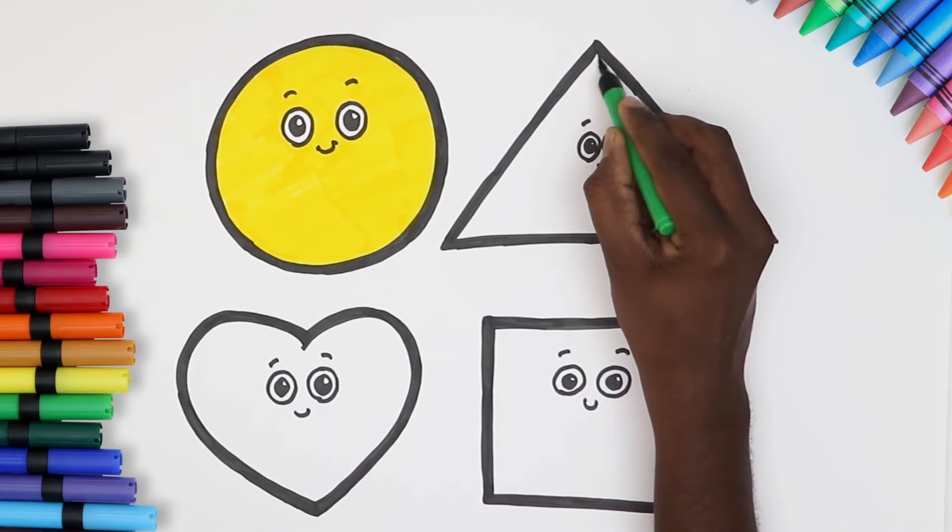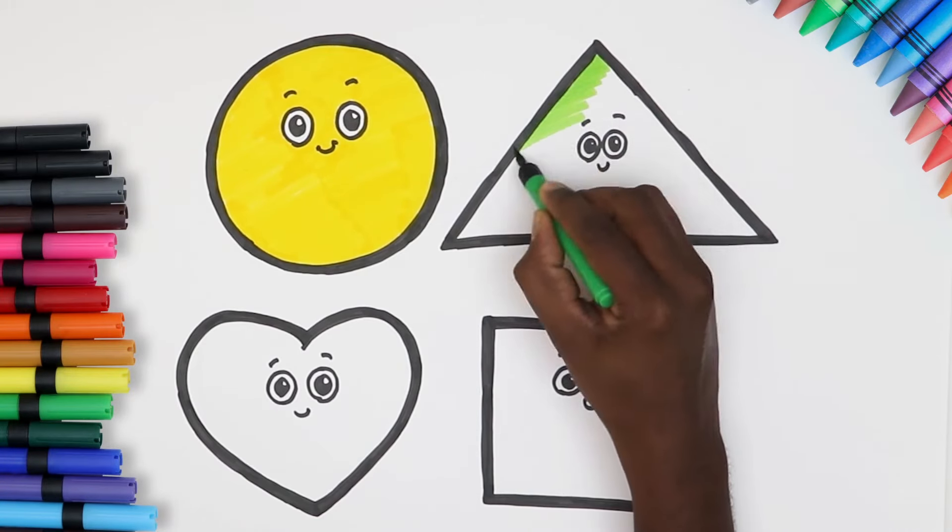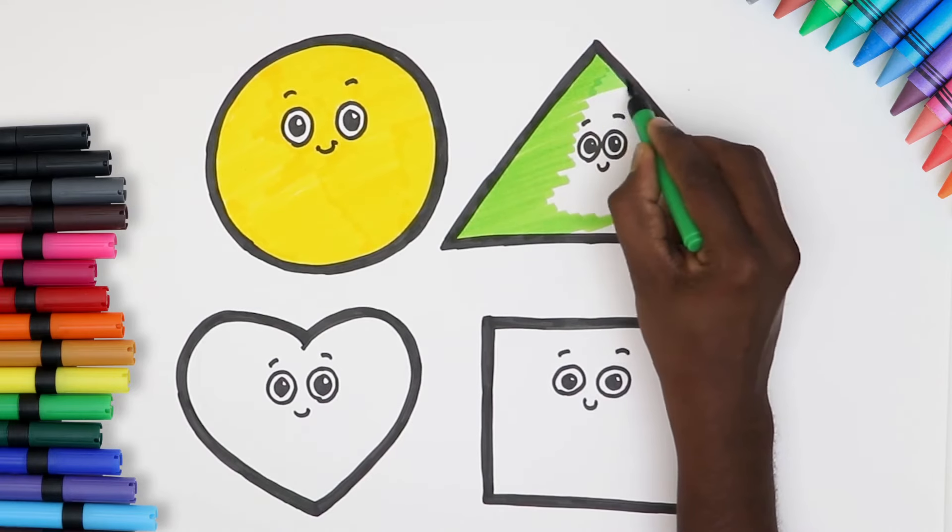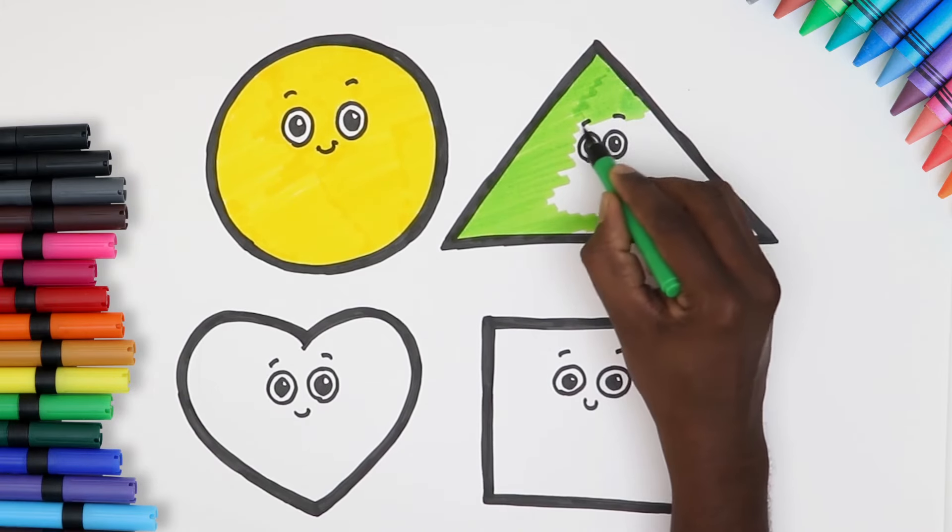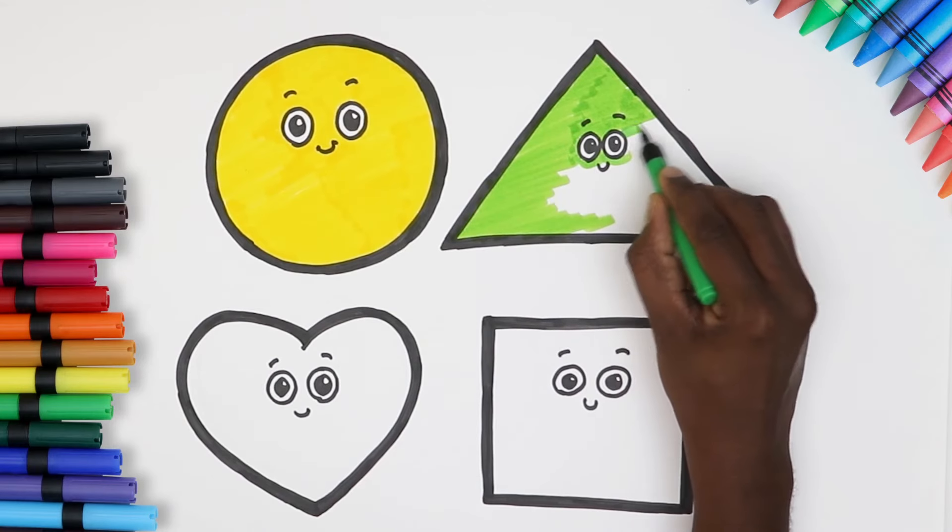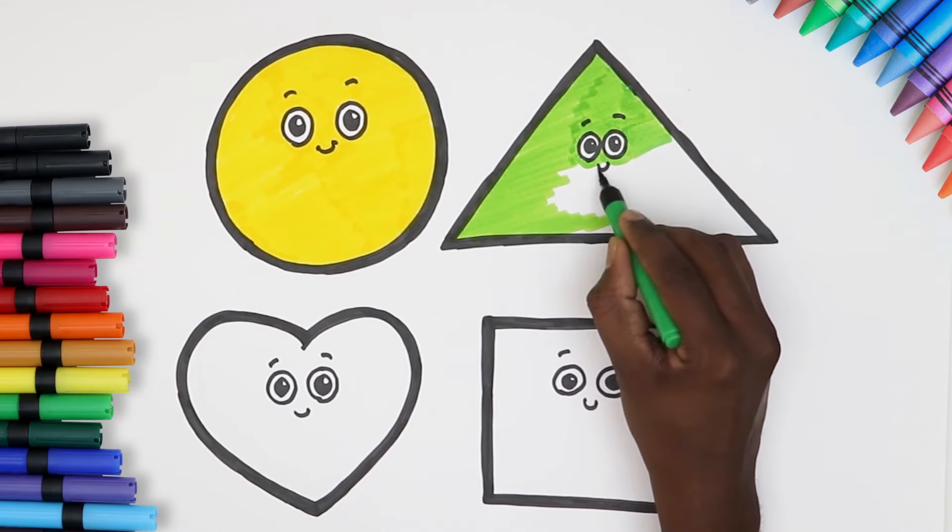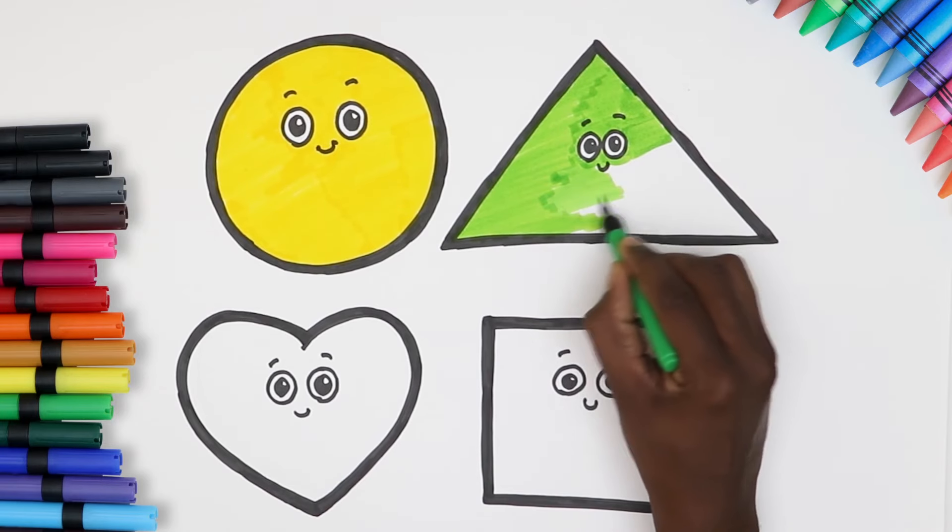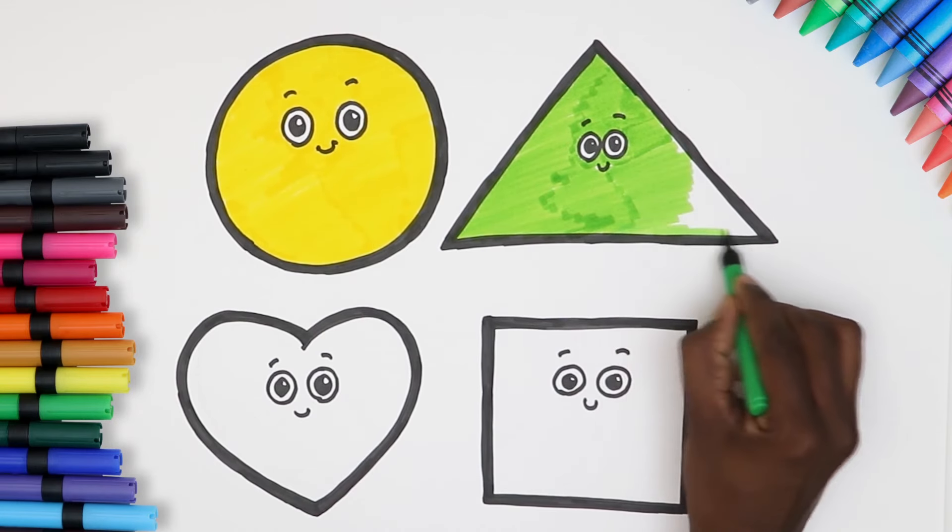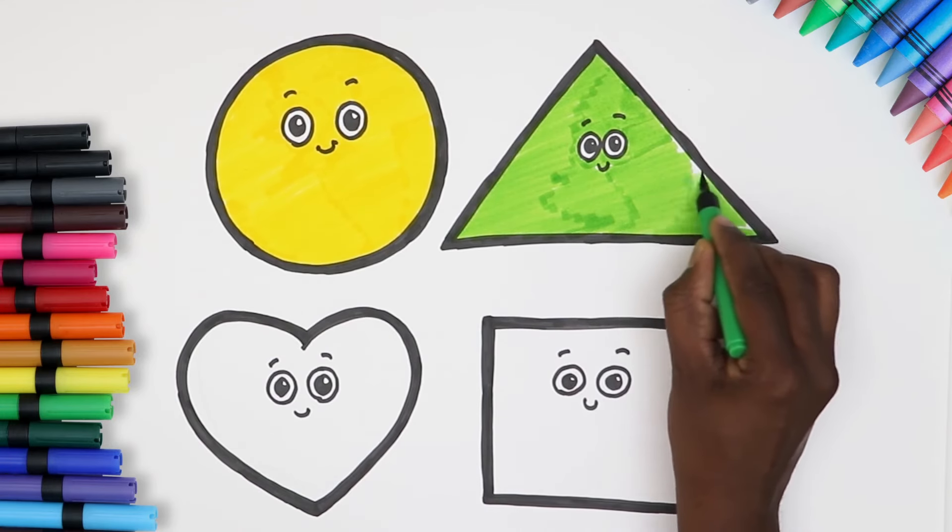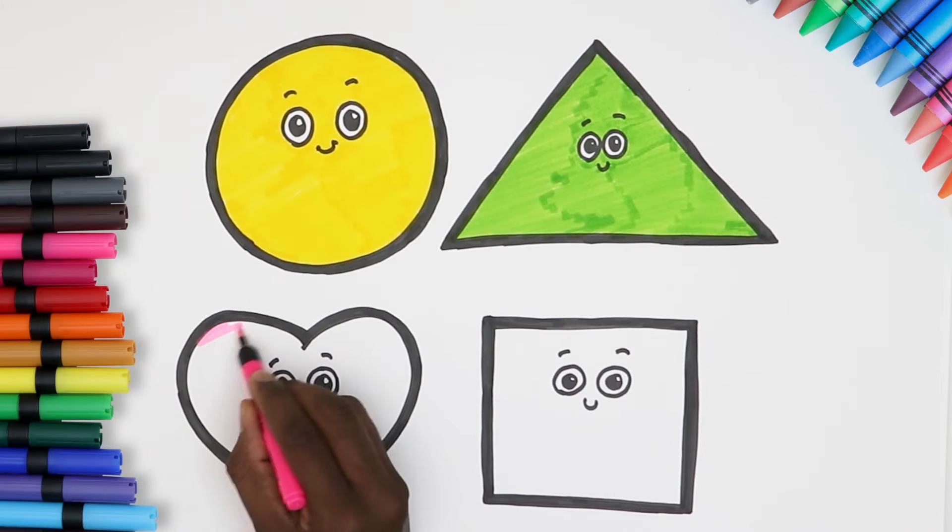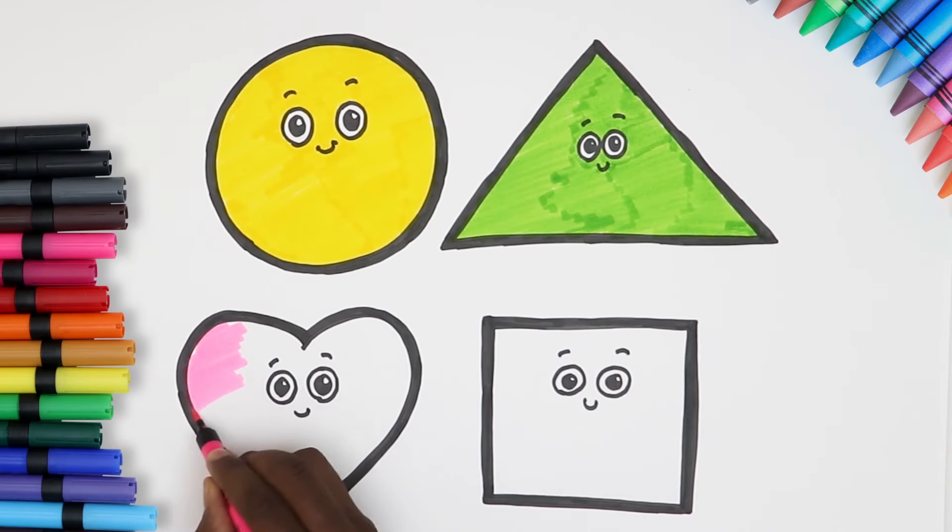Let's move on to our triangle. A light green colour. Let's stay within the lines, nice and neat! And here we have it, a triangle! Yay! Moving on to the heart, pink will look great, don't you think?